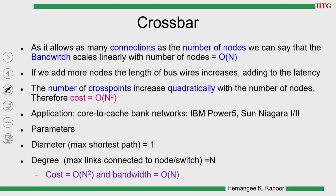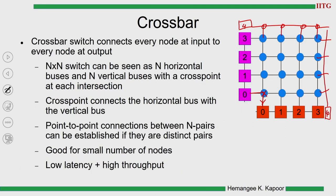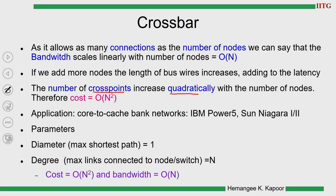Although we can establish up to order n distinct pairs communicating simultaneously, when I add new nodes the number of cross points increases quadratically. Every time I increase the grid, the cross points increase as order n squared. If I have a 4×4 grid and add one node, I end up adding many more cross points. So your grid increases quadratically and cross points increase as order n squared — just adding one node increases your cost by the square.